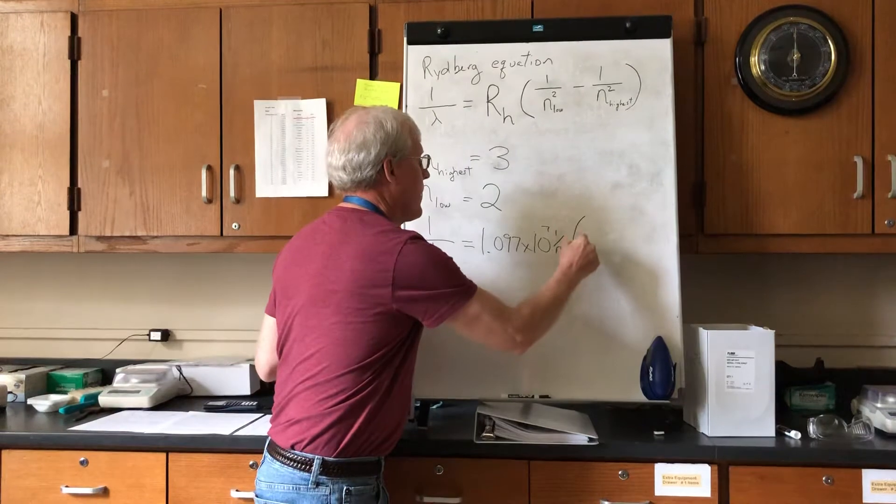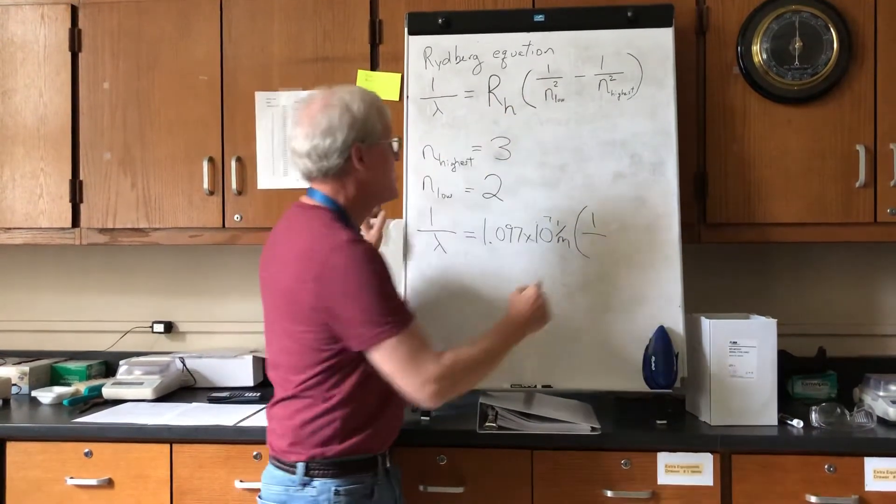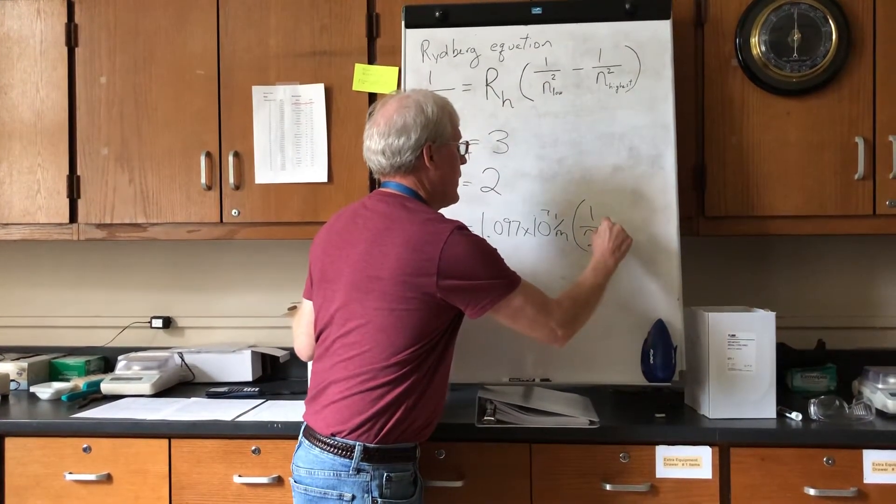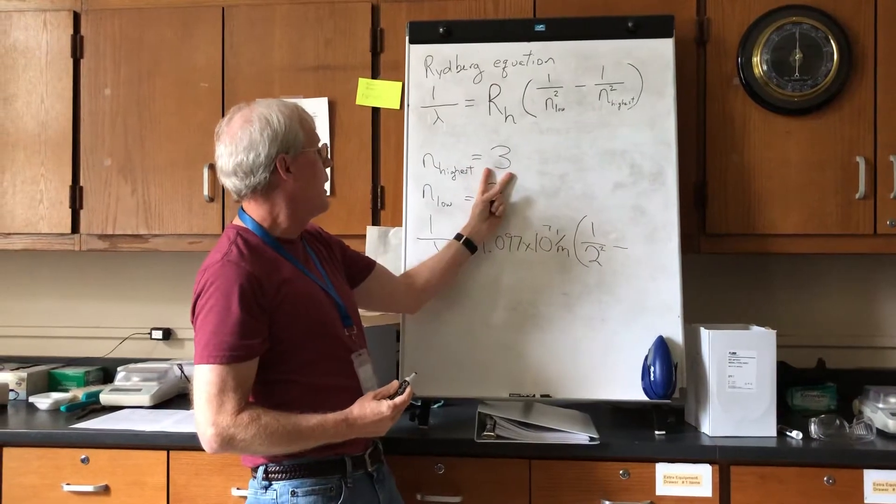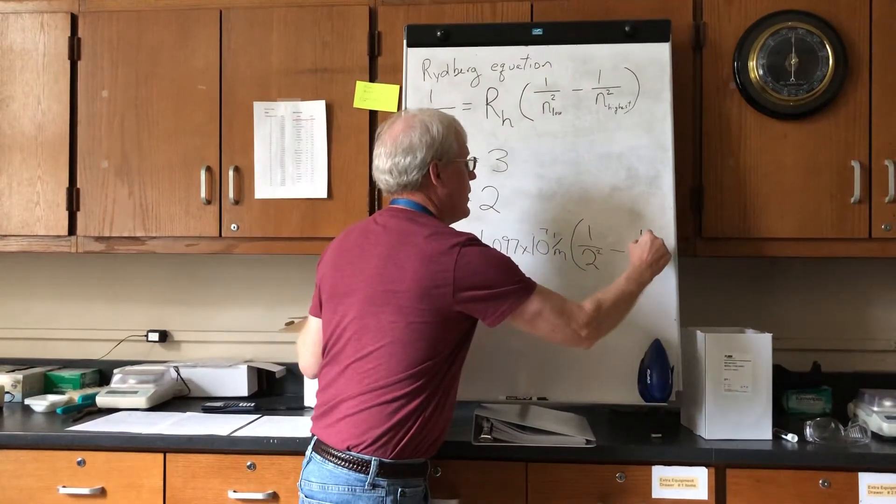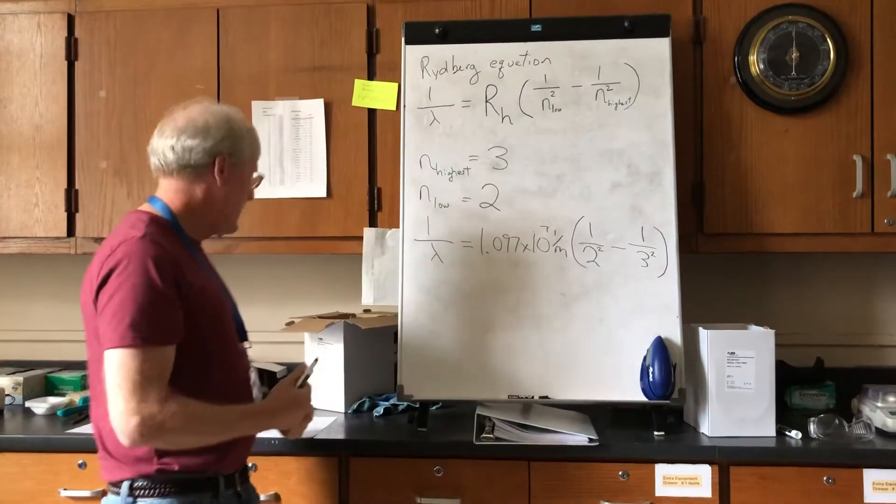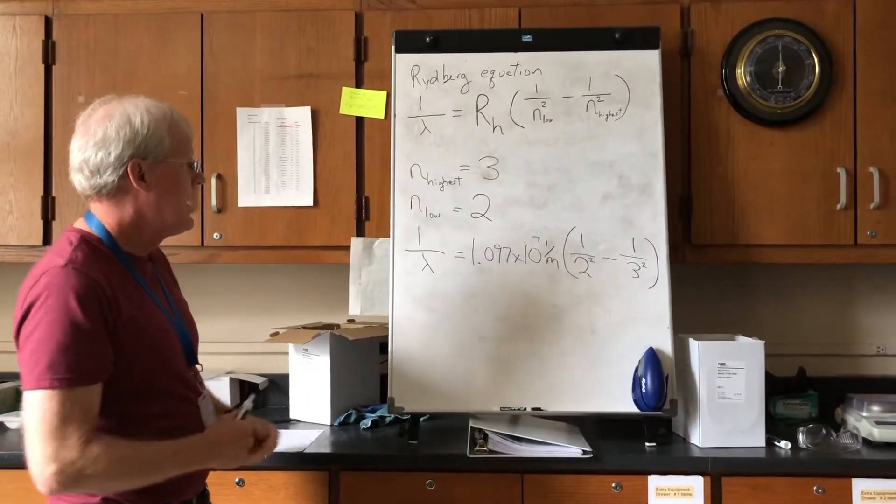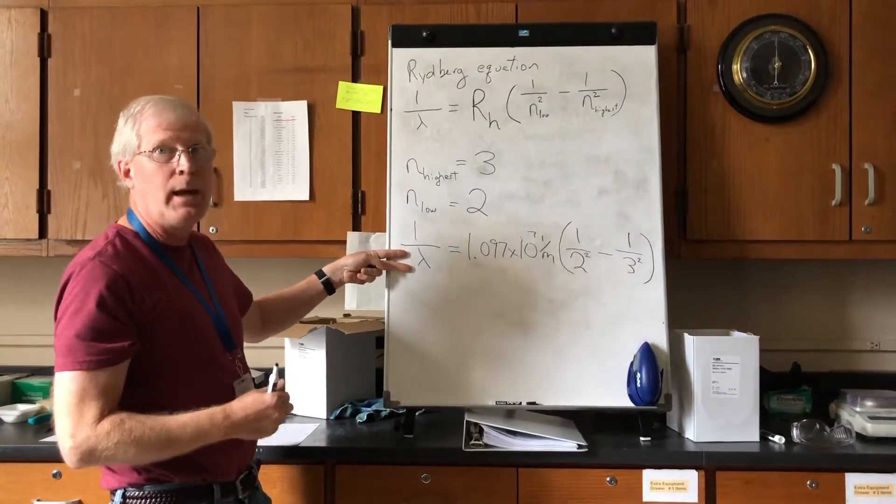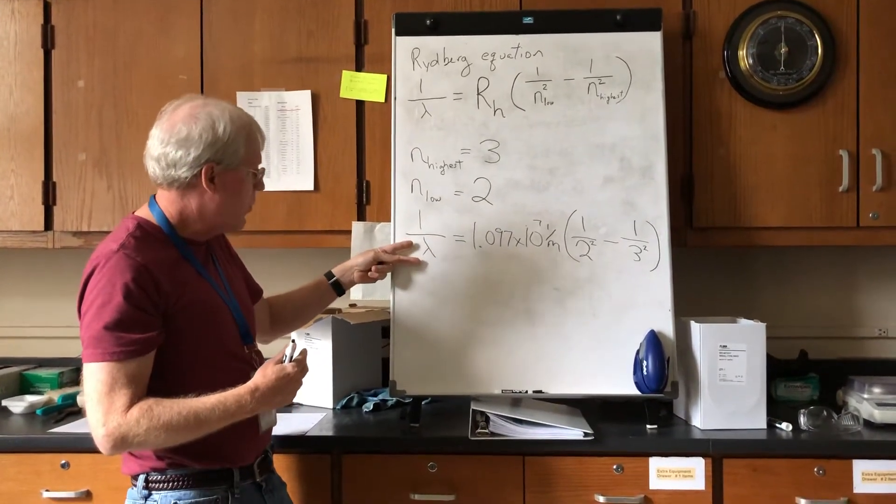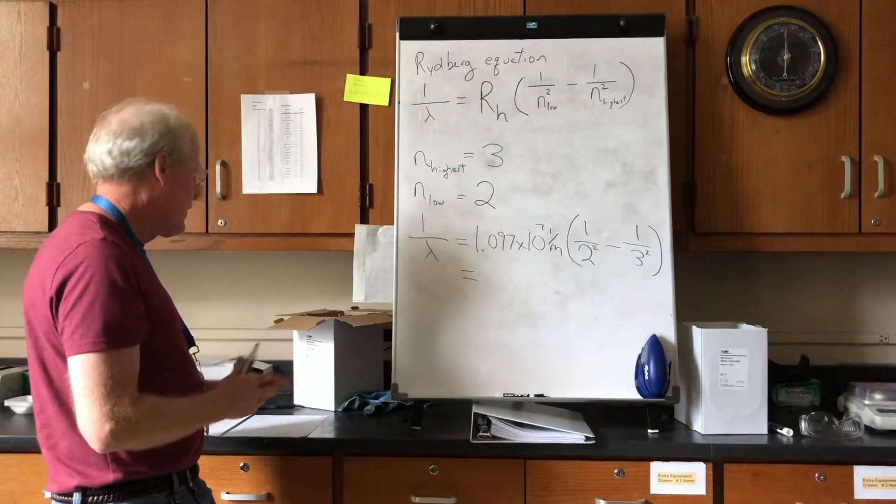Now plugging in the rest of the formula, we'll have 1 over the lowest energy level, which is a 2, but it needs to be squared, so I'll put the 2 in there and square it. Then you've got the highest energy level, which we're going to plug in a value of 3, so I'm going to have 1 over 3 squared. I've got all the numbers plugged in there, got my right power of 10. I can do all this math and I'm going to end up with a 1 over wavelength value, and then in the last algebraic step I can calculate what just the wavelength part is.